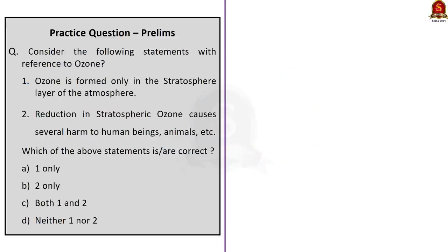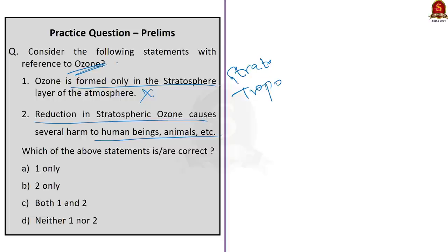Question 3: Consider the following statements with reference to ozone. Statement 1: Ozone is formed only in the stratosphere. Statement 2: Reduction in stratospheric ozone causes several harms to human beings, animals, etc. Statement 1 is incorrect because ozone is formed both in the stratosphere and the troposphere. Statement 2 is correct because stratospheric ozone protects against harmful UV radiation reaching the Earth's surface; thus, reduction in stratospheric ozone causes several harms to human beings — for example, it might lead to skin cancer. So the correct answer is option B — 2 only.